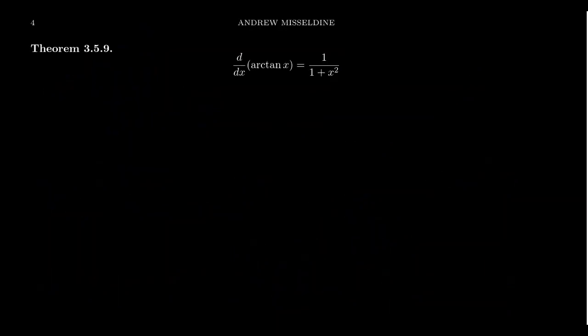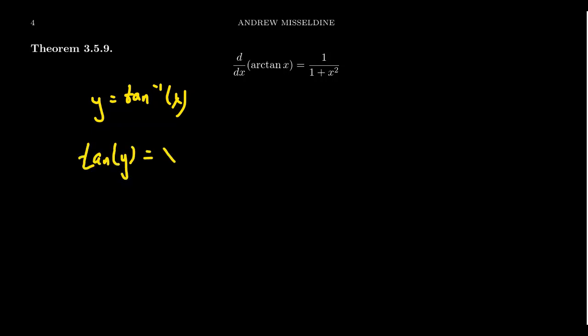So that's kind of cool — we were able to use implicit differentiation to find the derivative of sine inverse because we knew the derivative of sine. Let's try this with a different trigonometric function. Let's compute the derivative of arc tangent of x. We claim its derivative is going to be 1 over 1 plus x squared. So let's try the same strategy we did before.